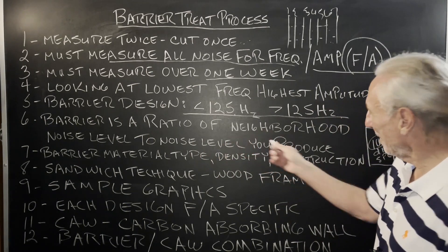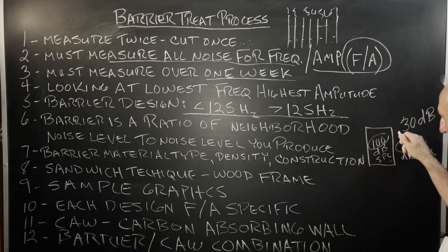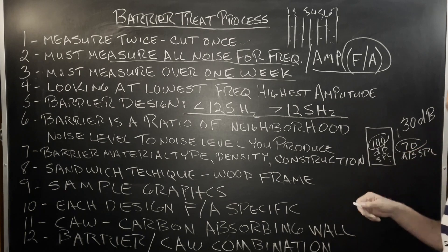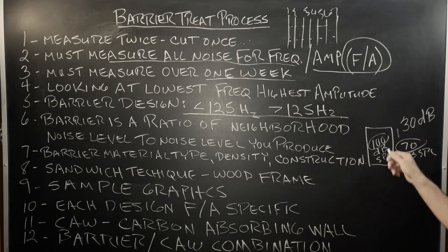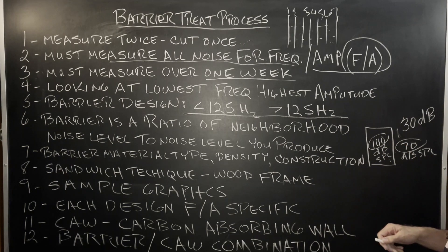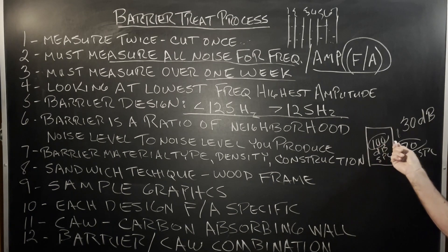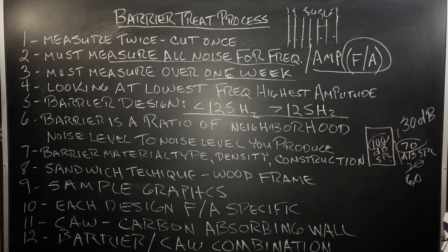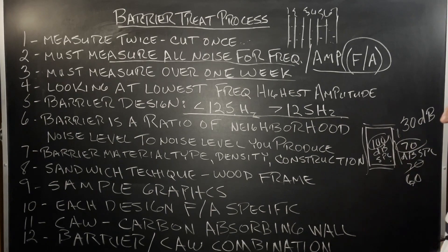The barrier that we build in any room is always a ratio of what's going on in the neighborhood. Let's say this is a room in a neighborhood — in most neighborhoods, 70 to 75 dB SPL is the steady, constant range. We're going to produce 100-plus SPL in the room, so we have roughly a 30 dB range of energy to manage. We want to keep the room at 100 dB but not leak any more than 60 into our 70 dB neighborhood number. If we stay under the radar at 60, nobody hears us. The barrier we build is the ratio between how much energy is in the room and how quiet the neighborhood is.